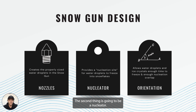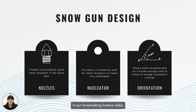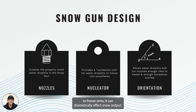The second thing is going to be a nucleator. A nucleator provides a nucleation site for water droplets to freeze onto and form snowflakes — we'll go into more detail on that in our snowmaking science video. Simply put, if the snow gun design doesn't produce the proper nucleation sites for water droplets to freeze onto, it can dramatically affect snow output.